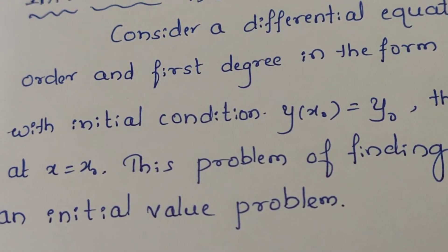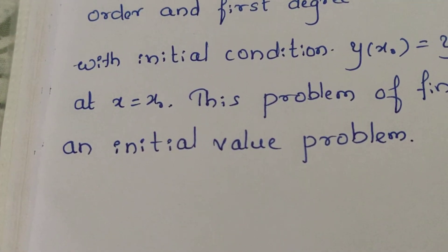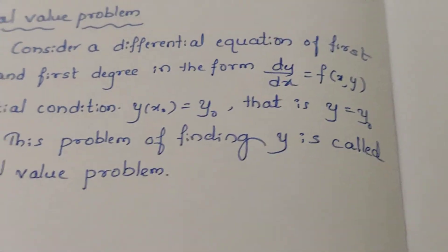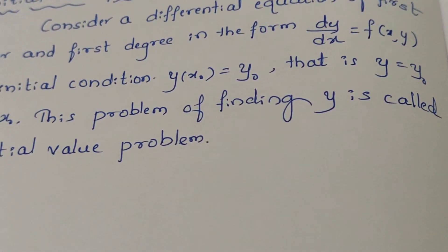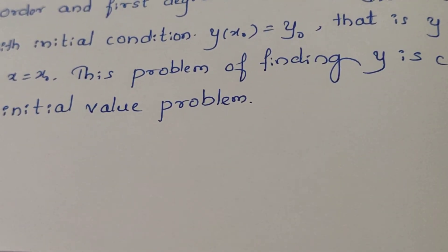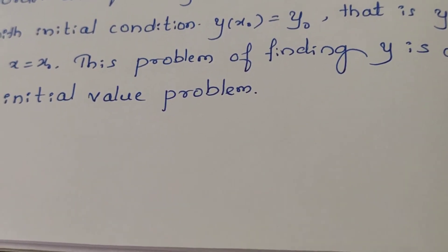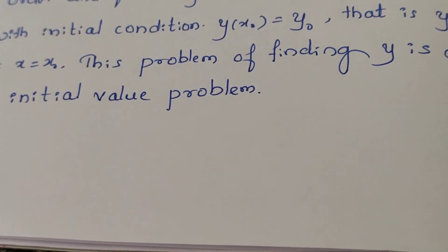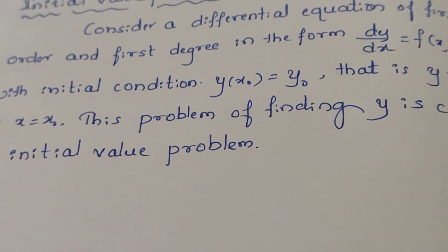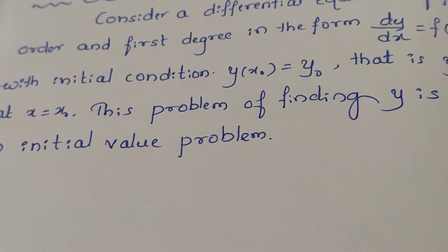For such problems, we need to compute y(x) in the neighborhood of the value x0. Given the initial condition x0, we need to find y(x). Equivalently, we compute y(x0 ± h), where h is a small increment — also called the step length — and that increment is denoted h.